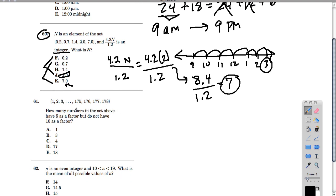Problem 61 says, how many numbers in the set above, so this group of numbers, have 5 as a factor, but do not have 10 as a factor? So we're going to look for a pattern here. We're starting at 1. We're going all the way to 178. So as we go along, we want to find out if we have 5 as a factor, but not 10.